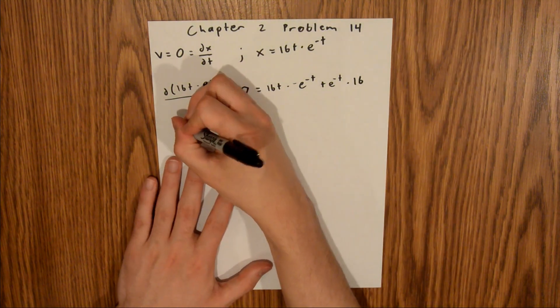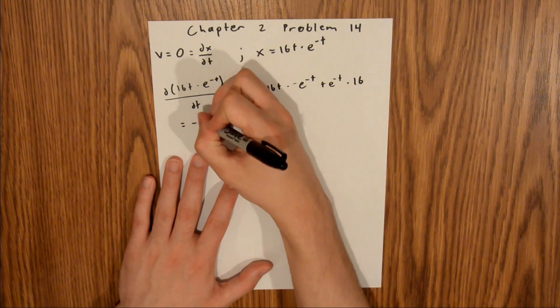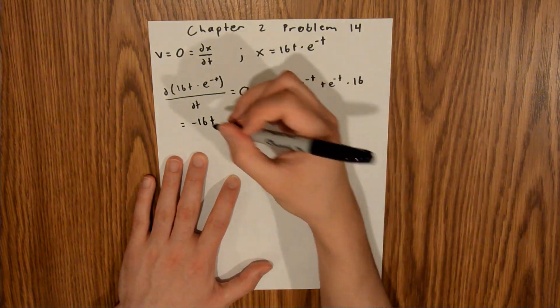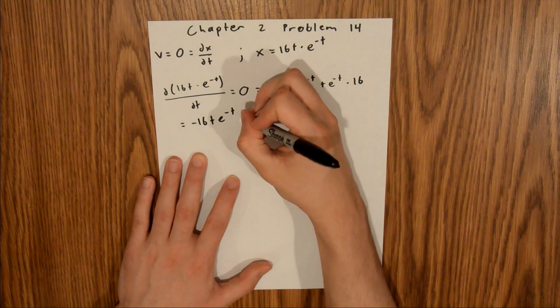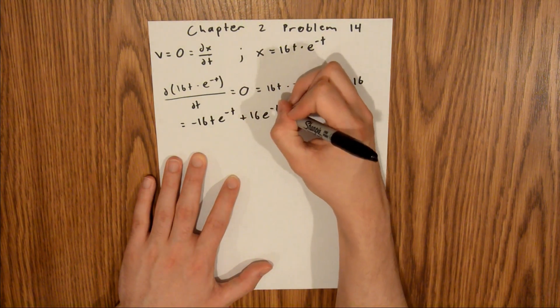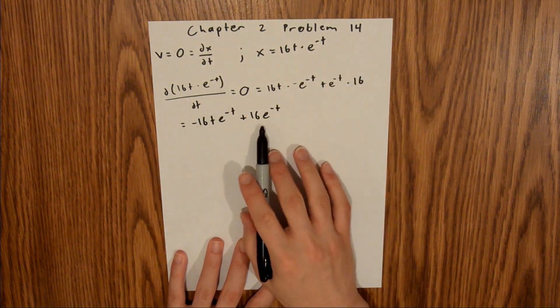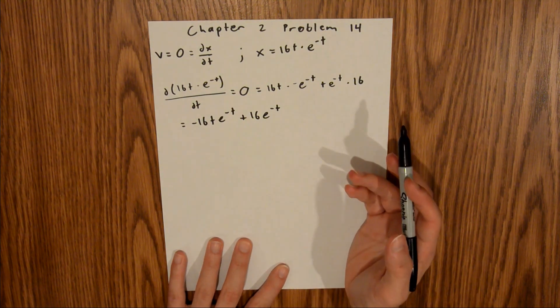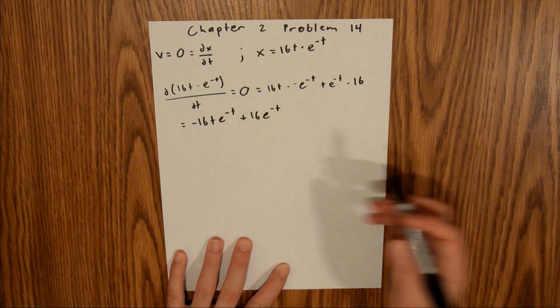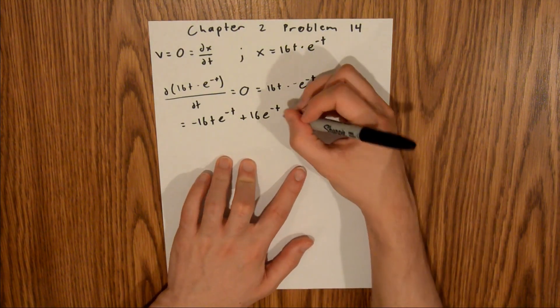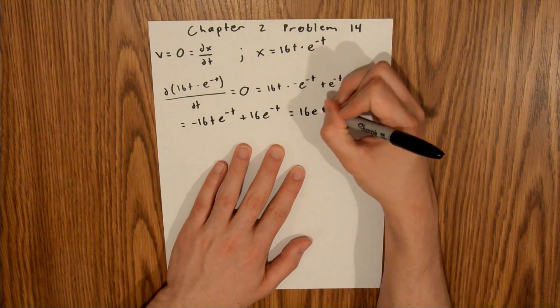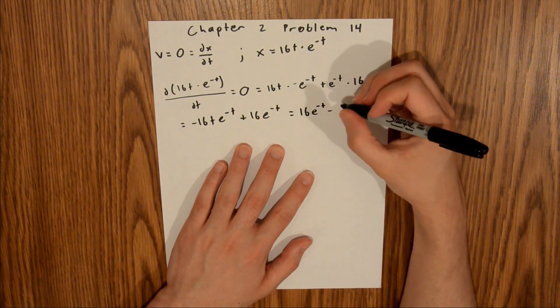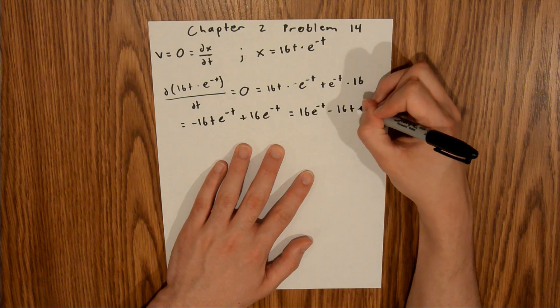And so that is equal to negative 16t e to the negative t plus 16e to the negative t. We have 16e to the negative t in both of these terms, so we can factor that out. I'm just going to rearrange this. This will be 16e to the negative t minus 16t e to the negative t.